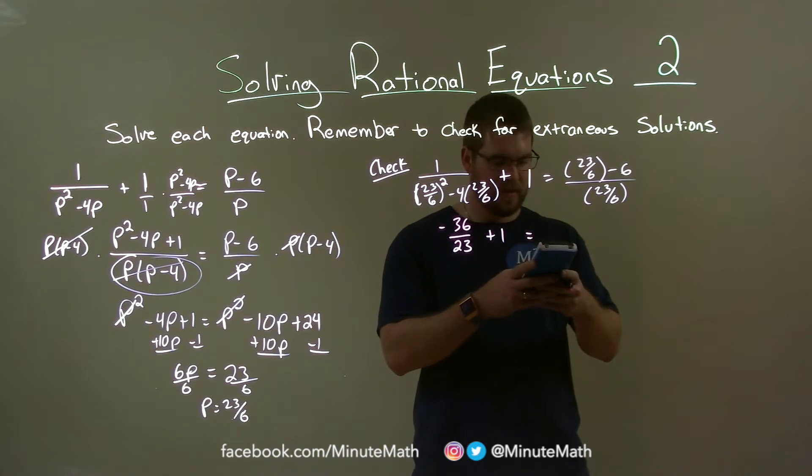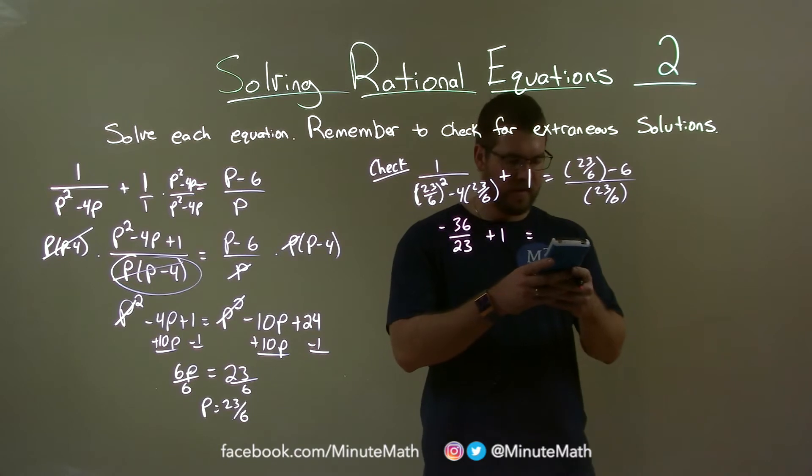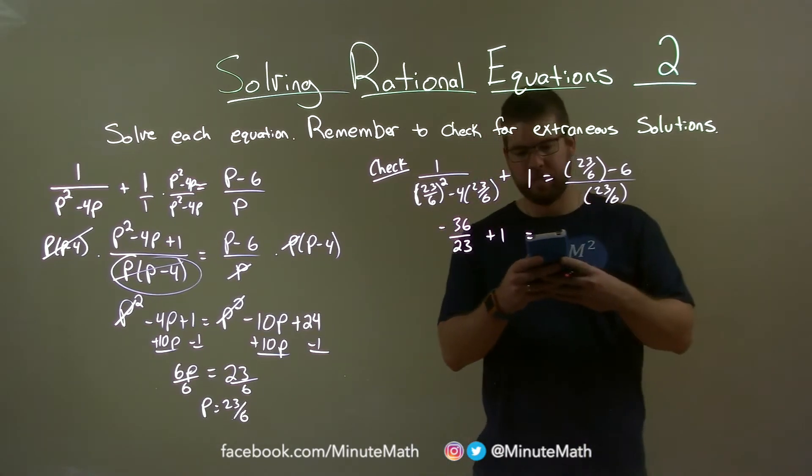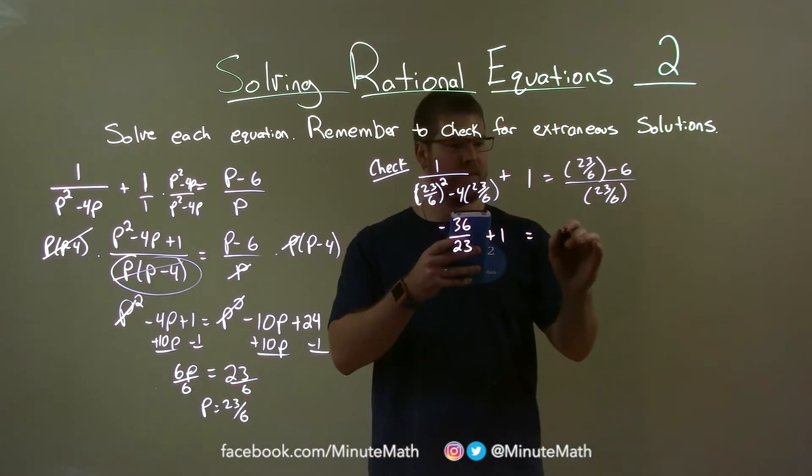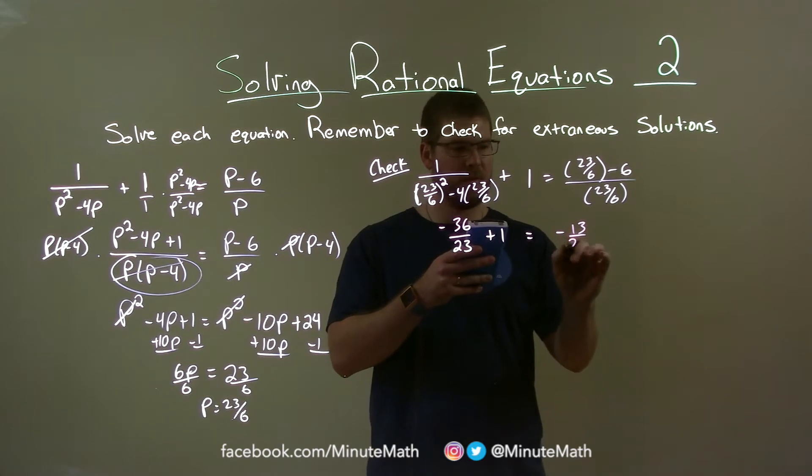23 divided by 6. Now there's always a chance you make a mistake running your calculator, so if it doesn't line out, always check it again, divided by 23 over 6, and we have negative 13 over 23.